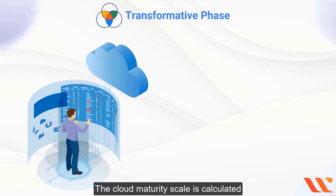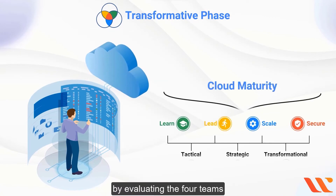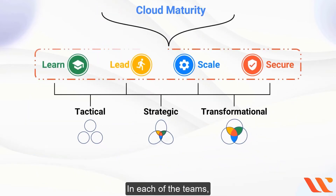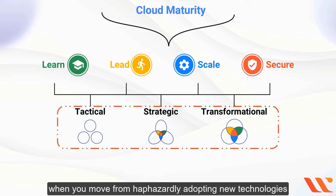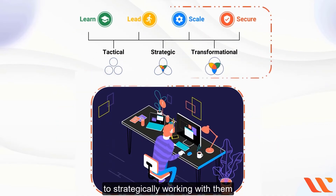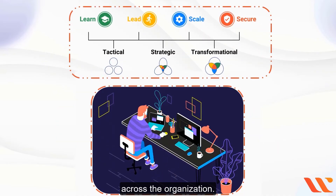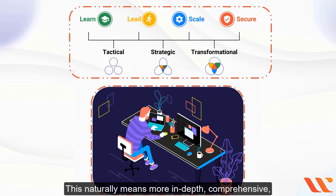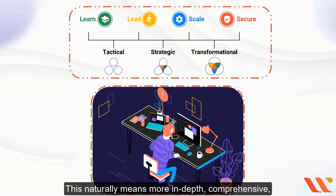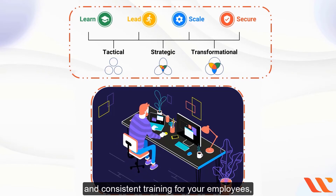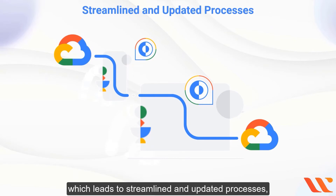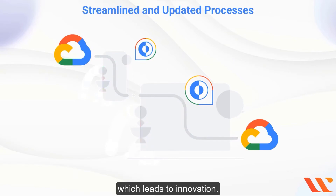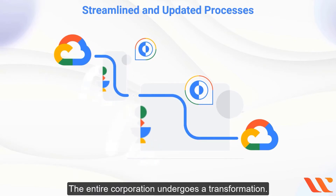The cloud maturity scale is calculated by evaluating the four themes — Learn, Lead, Scale, Secure — across the three stages. In each theme you can see what happens when you move from haphazardly adopting new technologies to strategically working with them across the organization. This naturally leads to more in-depth, comprehensive, and consistent training, which leads to streamlined and updated processes, which leads to innovation, and ultimately the entire corporation undergoes a transformation.